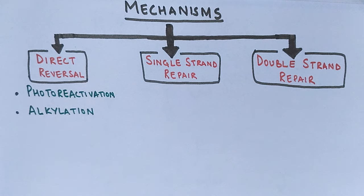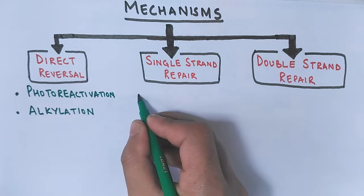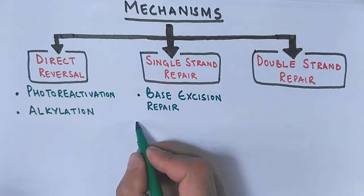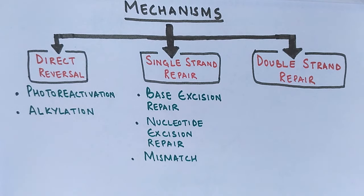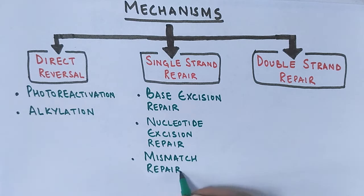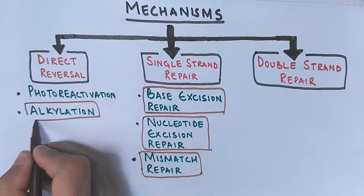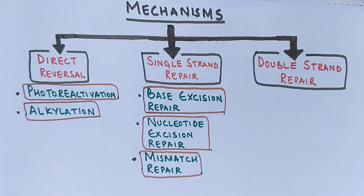Next is the single strand repair mechanism. In this type, the DNA has only one strand damaged, so the other strand can be used as a template to guide the correction of the damaged strand. Within this category there are three mechanisms: base excision repair, nucleotide excision repair, and mismatch repair. All three will be discussed in the next part of the video.